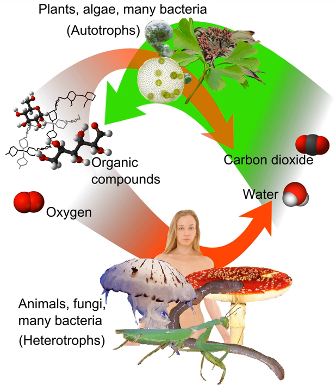An autotroph, or producer, is an organism that produces complex organic compounds, such as carbohydrates, fats, and proteins, from simple substances present in its surroundings, generally using energy from light — photosynthesis — or inorganic chemical reactions — chemosynthesis.